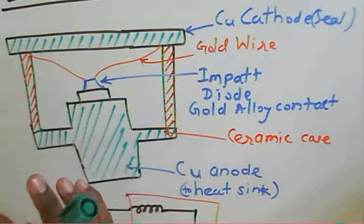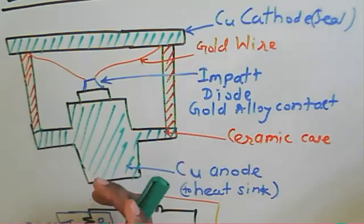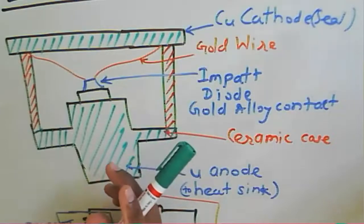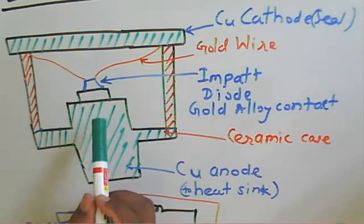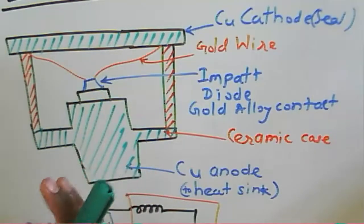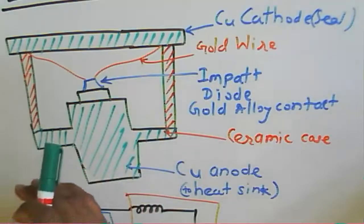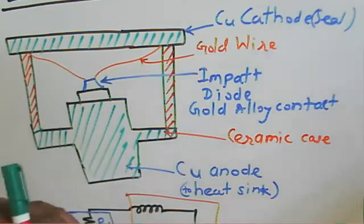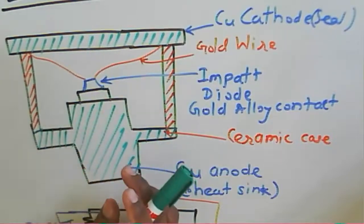To get high power as well as high efficiency, we use a metallic heat sink. The heat sink is an integral part of the IMPATT diode device. At the time of manufacturing, the heat sink comes along with the device, which is why we say the heat sink is an integral part of the IMPATT diode.